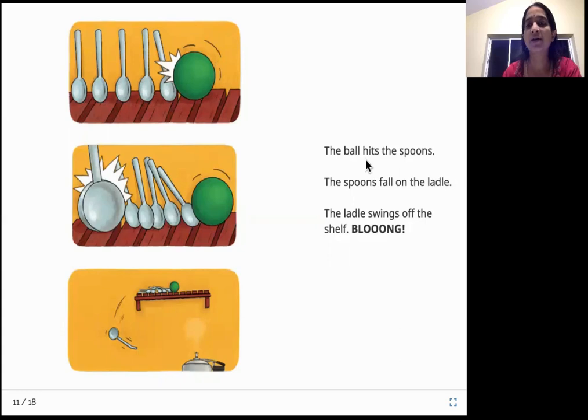The ball hits the spoons. The spoons fall on the ladle. The ladle swings off the shelf. Blong! So the ball hits the spoons. Each of them fall on the other spoons. And finally, the spoons fall on the ladle. The ladle falls down from the shelf with a plong sound.